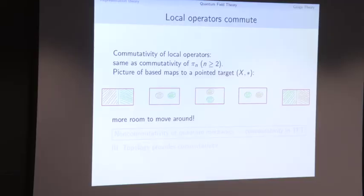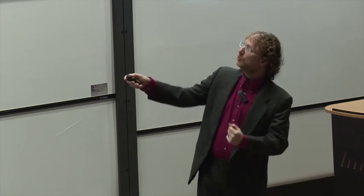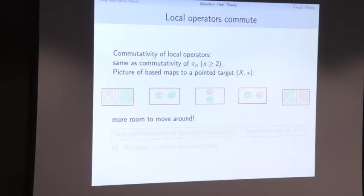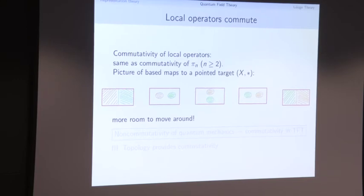Why is this topology? Recall from algebraic topology why π₂ of a space is commutative. We think of based maps from S², shrink them to little blobs, and then we can move the two blobs around each other continuously — going from one multiplication to the opposite multiplication. This is the familiar proof that π₂ or higher homotopy groups are commutative because there's enough room to move around once you're in dimension above one. This is exactly what happens in topological field theory.